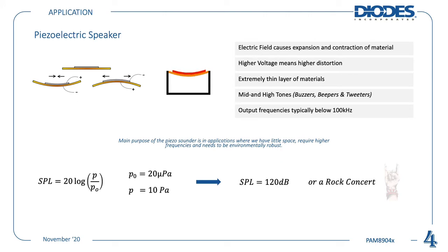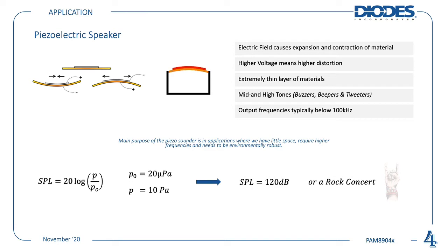Before getting into more detail regarding the PAM 8904, we need to understand the piezoelectric speaker a bit. The speaker itself is made of materials that expand and contract as voltage is being applied. This causes the material to swing and produce sound waves, as you can tell by the animation. The higher the voltage, the higher the amplitude, meaning louder. The advantage is that this can be done with a thin layer of materials, and is one of the main selling points.